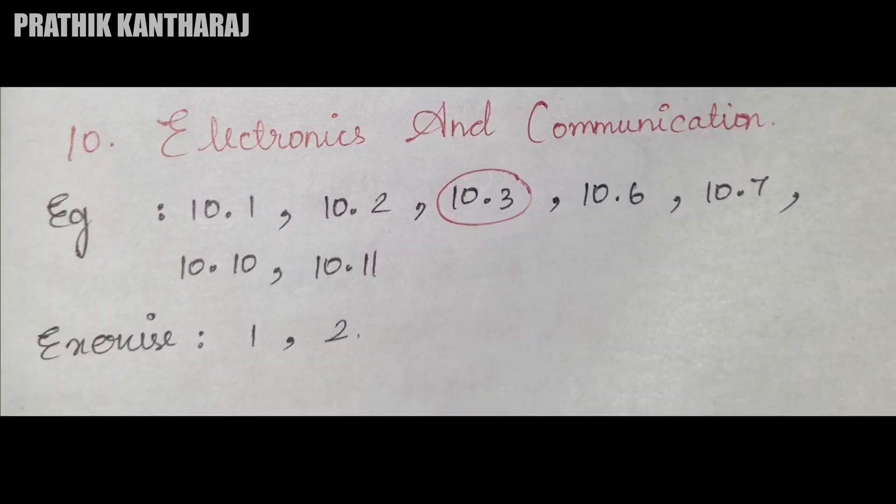Coming to the most crucial chapter — mostly the problem that we get to is Electronics and Communication. In the exercise section, we will get to: 1, 2, 3, 6, 7, 10, and 11. In the exercise section, 1 and 2 will have the most probability chance.